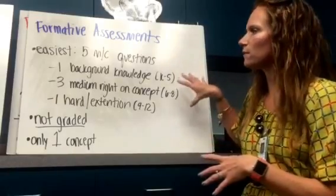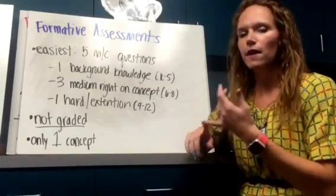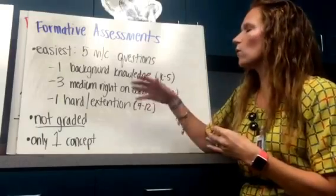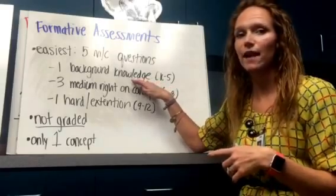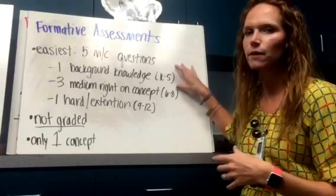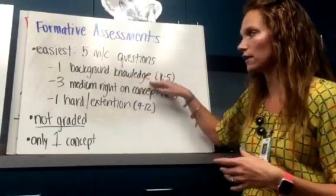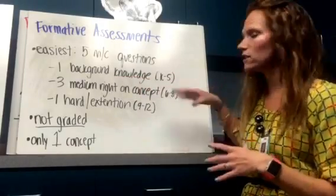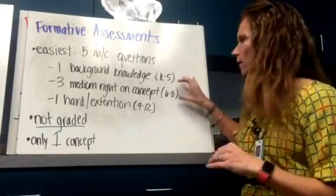When I do five questions, it's really simple. I do one question on background knowledge — knowledge that they should already come in with, either from the previous grade level if it's a concept that builds each year, or, more for social studies and science, maybe a concept they haven't seen since third, fourth, or fifth grade. I'll go back to that previous year's benchmark or standard and ask a question at that level. Then I'll ask three medium, right-on-concept questions — right at your standard, right on par with what the standard or concept is asking.